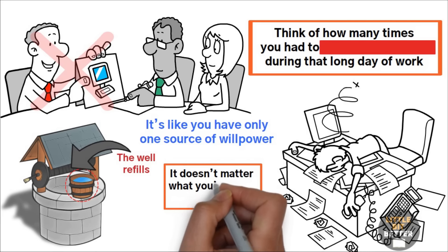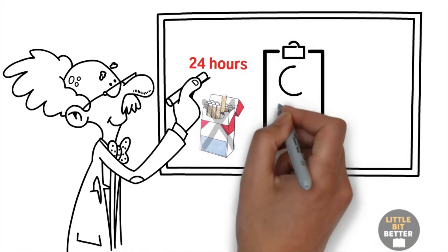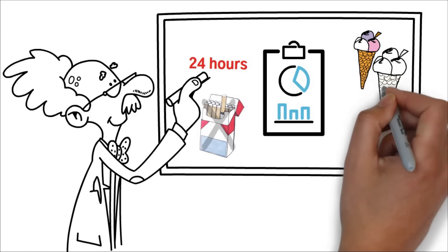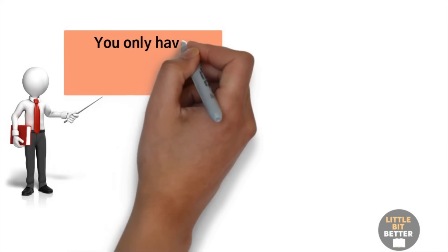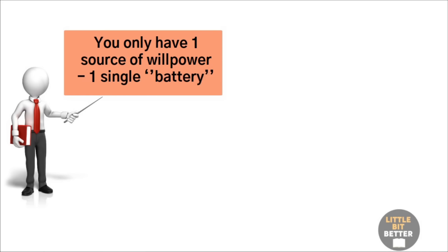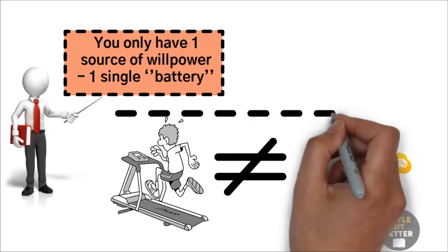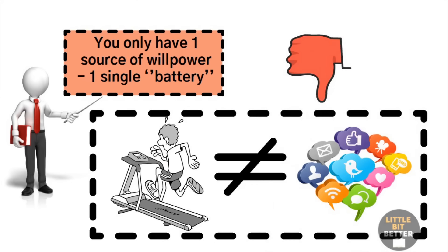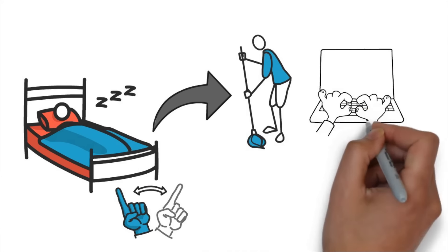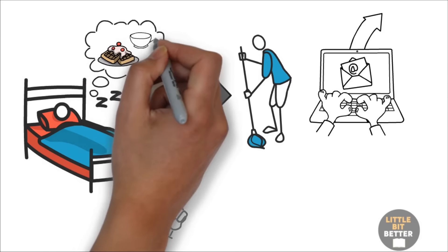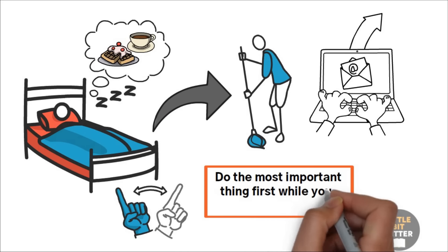If you use your willpower, you run out of it. It's like you have only one source of willpower, a big well, where you get willpower from, a bucket at a time until there's no more willpower there, and you have to wait until the well refills. It doesn't matter what you've used your willpower for. Studies show that smokers who go without a cigarette for 24 hours are more likely to binge on ice cream. So, the important lesson is this. You only have one source of willpower, one single battery. You don't have a different willpower source for exercise and a different one for Instagram. Everything you do depletes it. Never wake up and spend time on small tasks such as cleaning, responding to emails, or spending 20 minutes deciding what you should eat for breakfast. Do the most important thing first while your willpower is full.